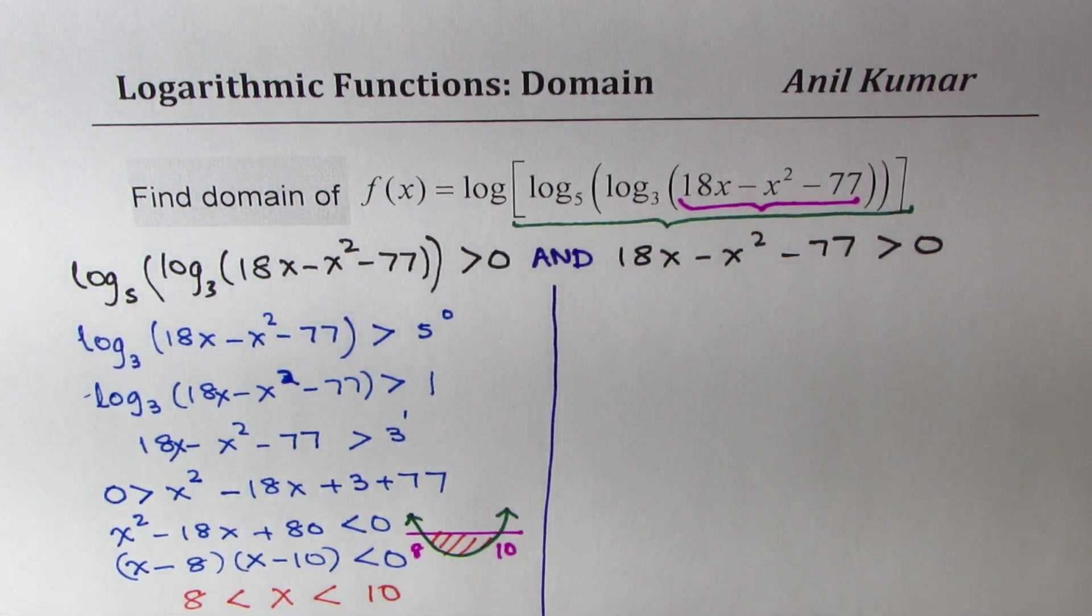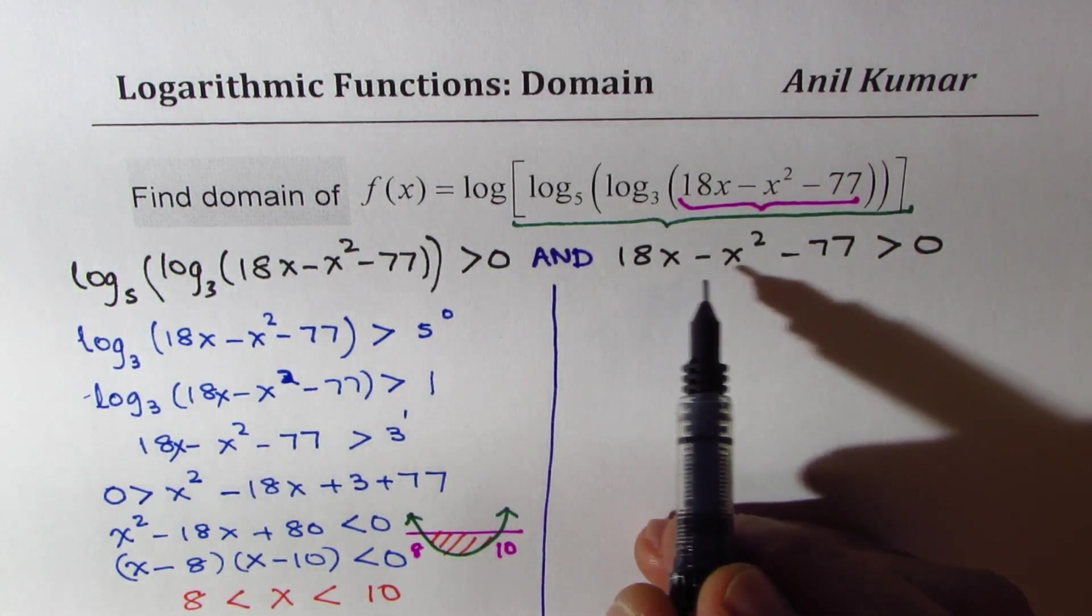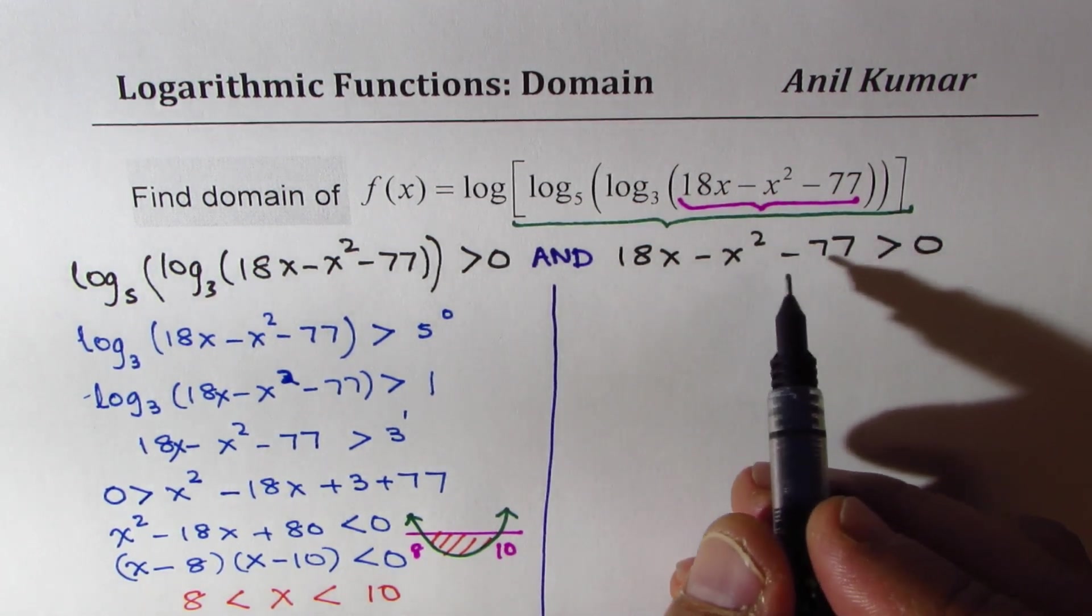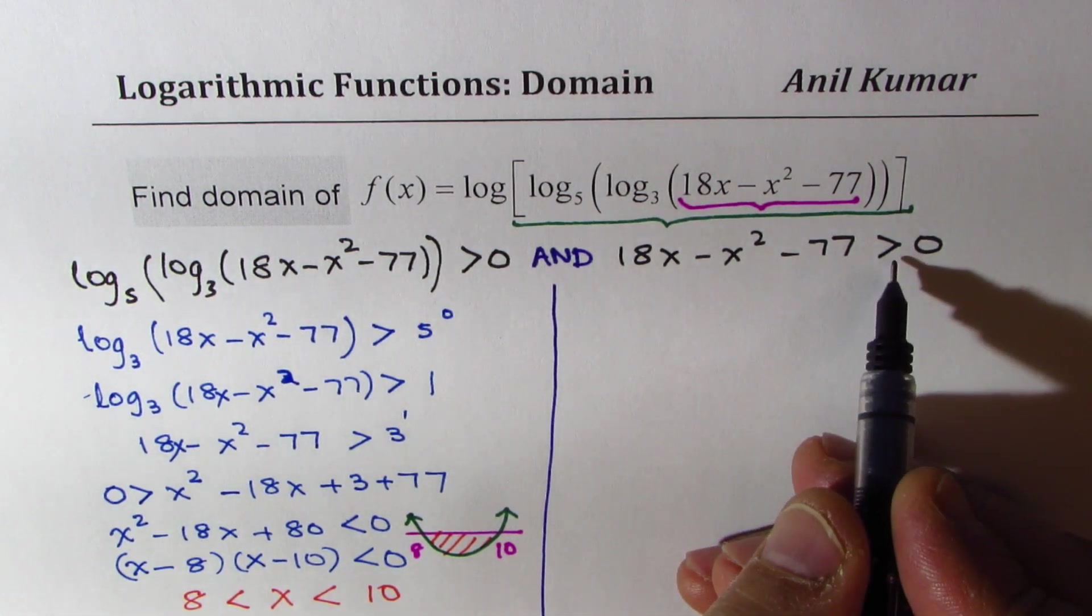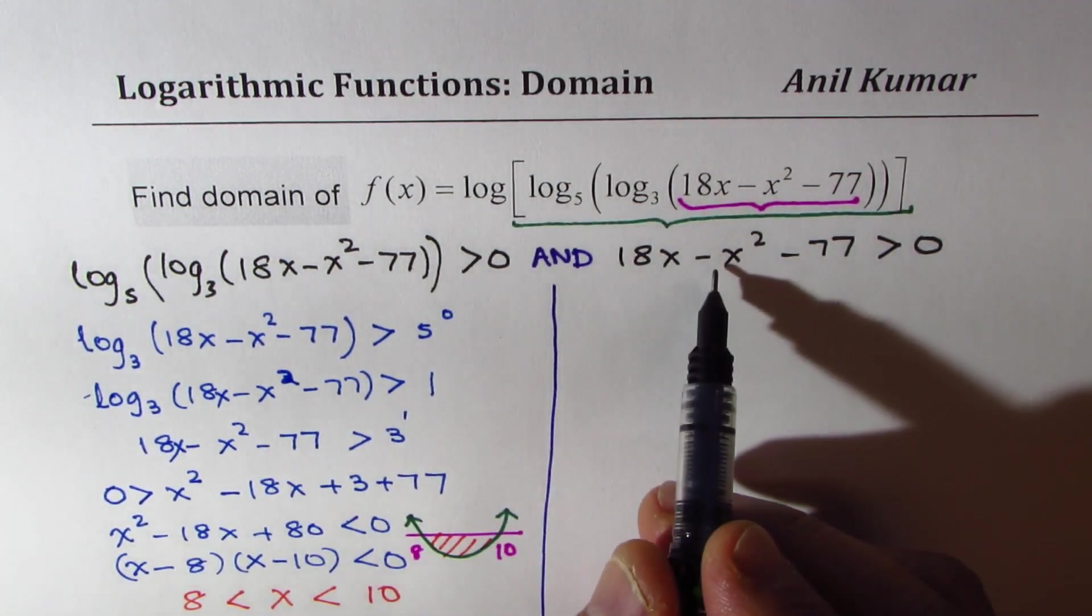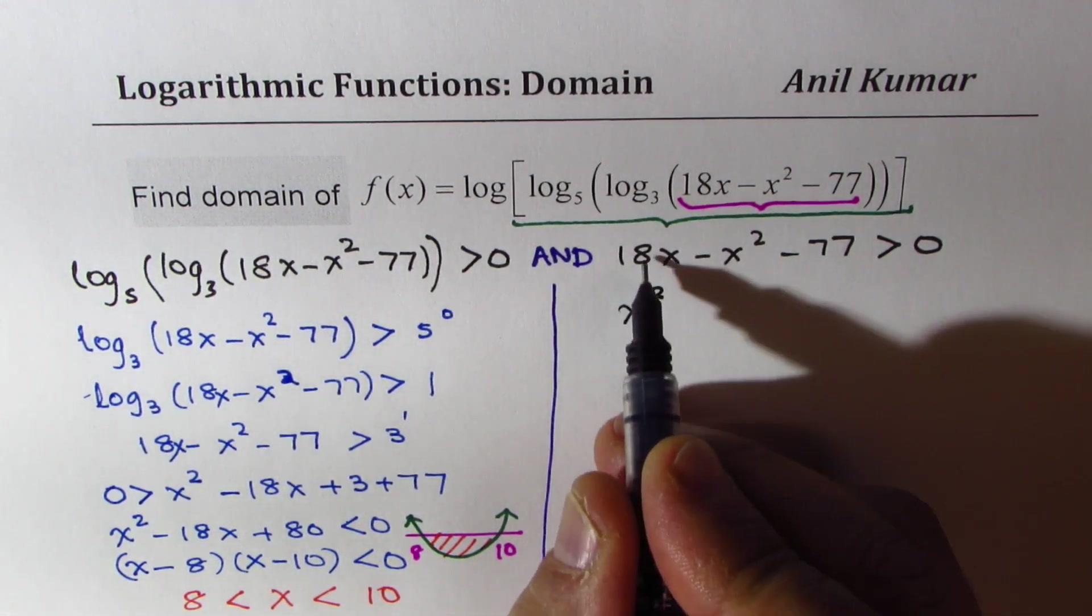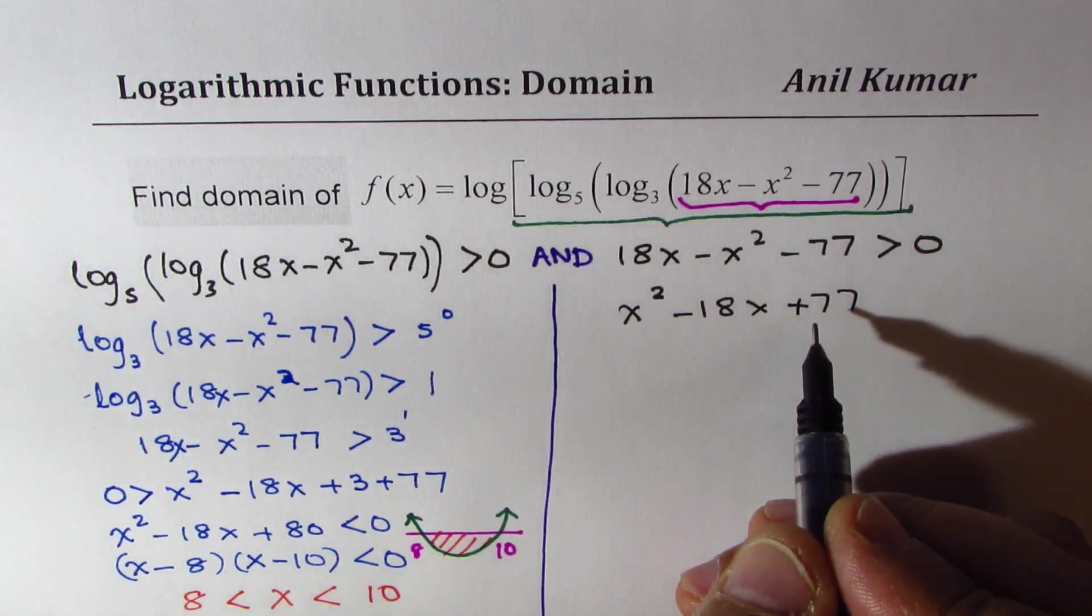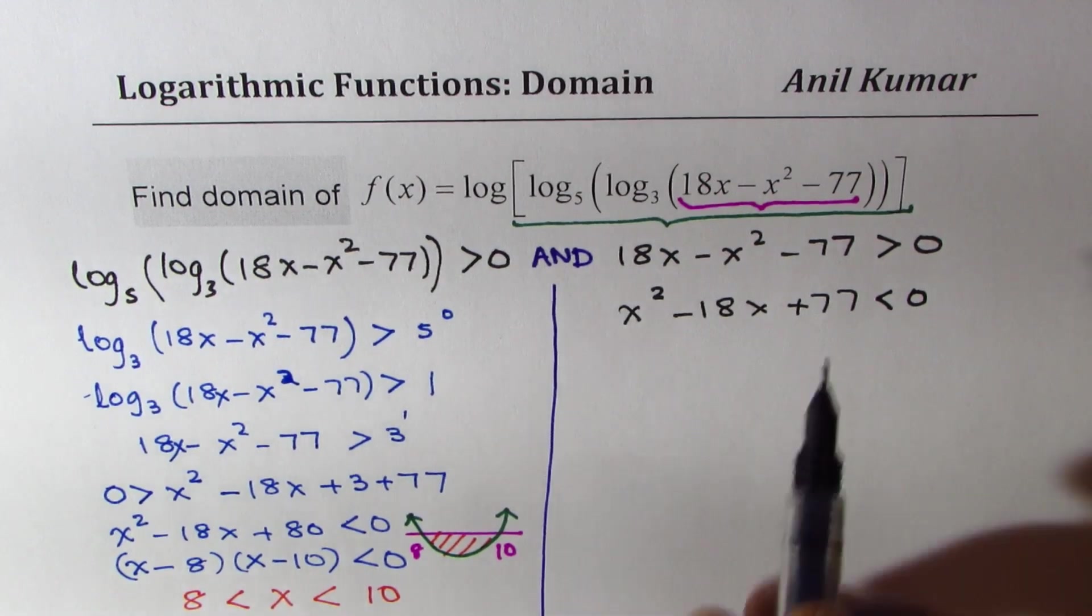Now let's move on to the right side and figure out the solution. 18x - x² - 77 should be greater than 0. We could multiply by negative, then the sign will change. I'm applying a different strategy. If I multiply by negative, I get x² - 18x + 77, and multiplying by negative means you change the sign.